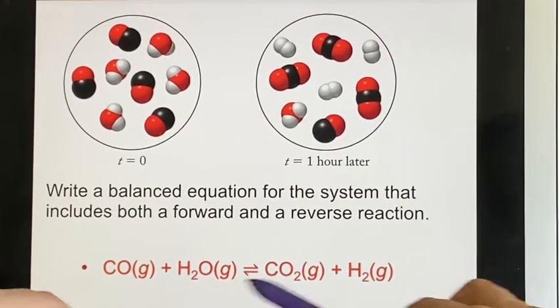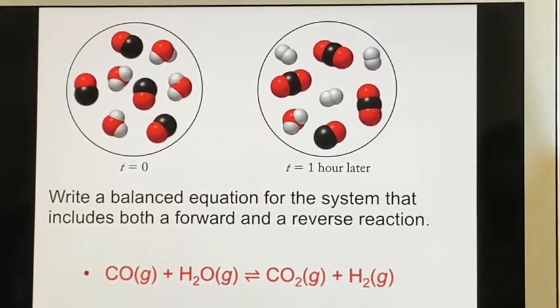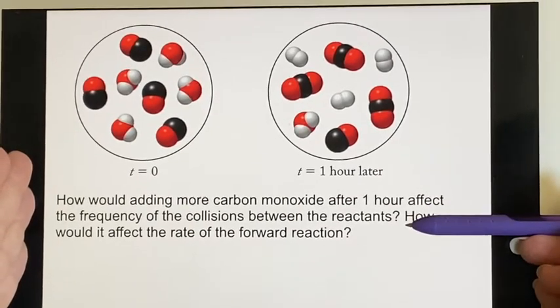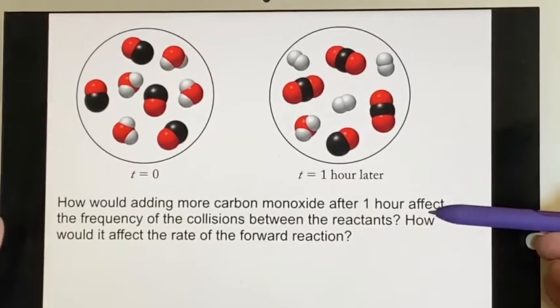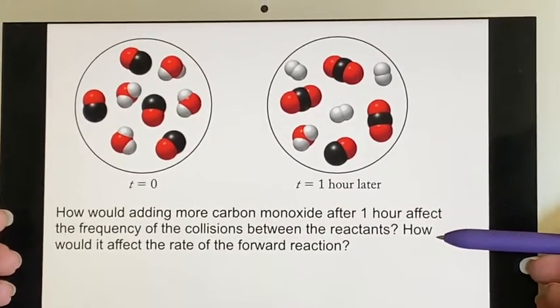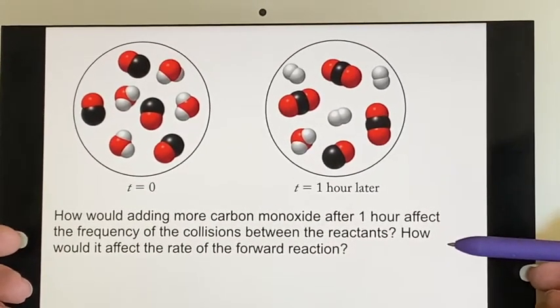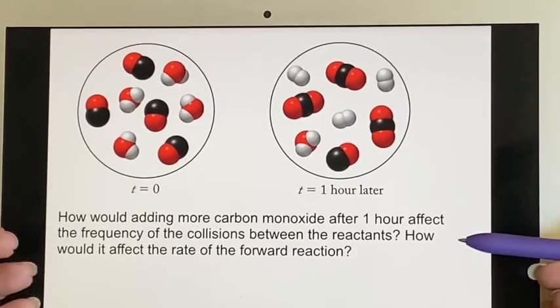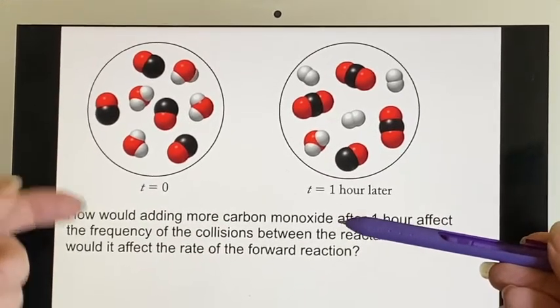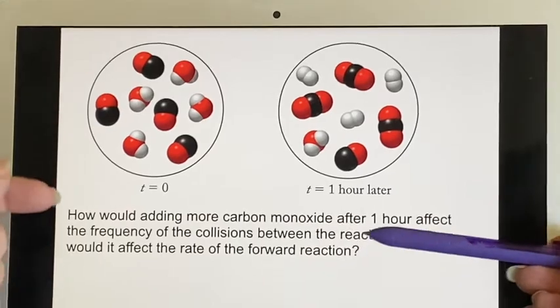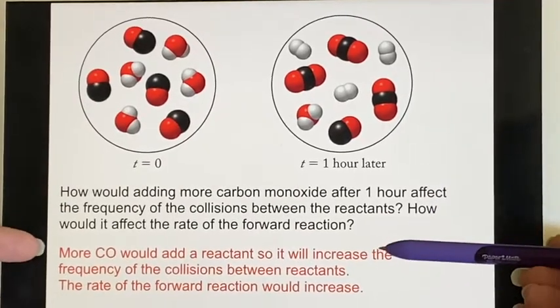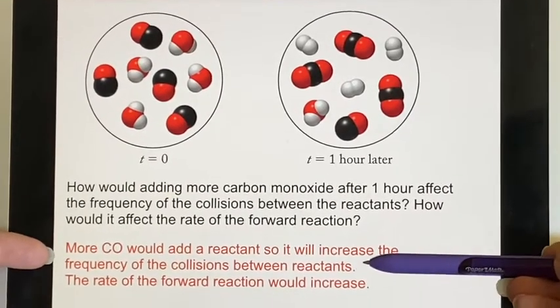How would adding more carbon monoxide after an hour affect the frequency of the collisions between the reactants? They're asking us to consider the kinetics of the situation, because we were doing kinetics in the last chapter and we said that the rate of a reaction depended on the concentration of the reactants. If I added more carbon monoxide, that was a reactant, so we would expect the rate in the forward direction to get higher. It's adding a reactant, so we'll increase the frequency of the collision between reactants, and the rate of the forward reaction would increase.